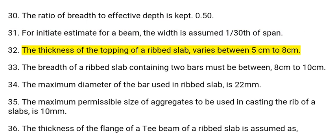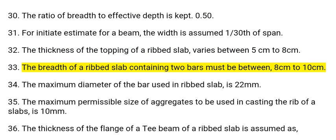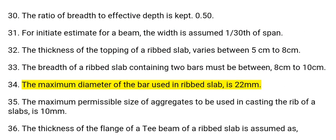32. The thickness of the topping of a ribbed slab varies between 5 cm to 8 cm. 33. The breadth of a ribbed slab containing two bars must be between 8 cm to 10 cm. 34. The maximum diameter of the bar used in ribbed slab is 22 mm.